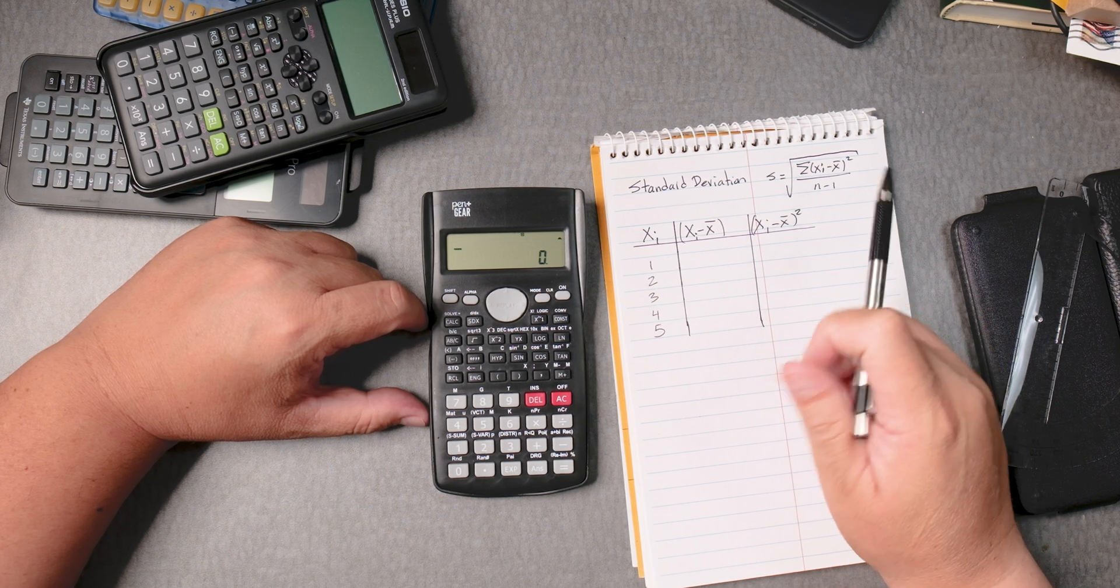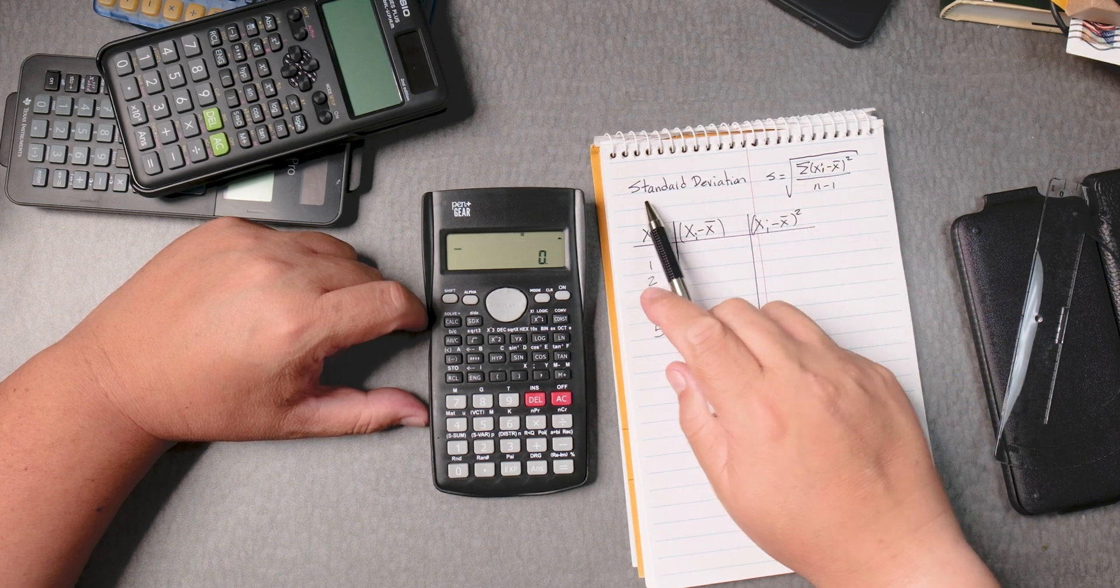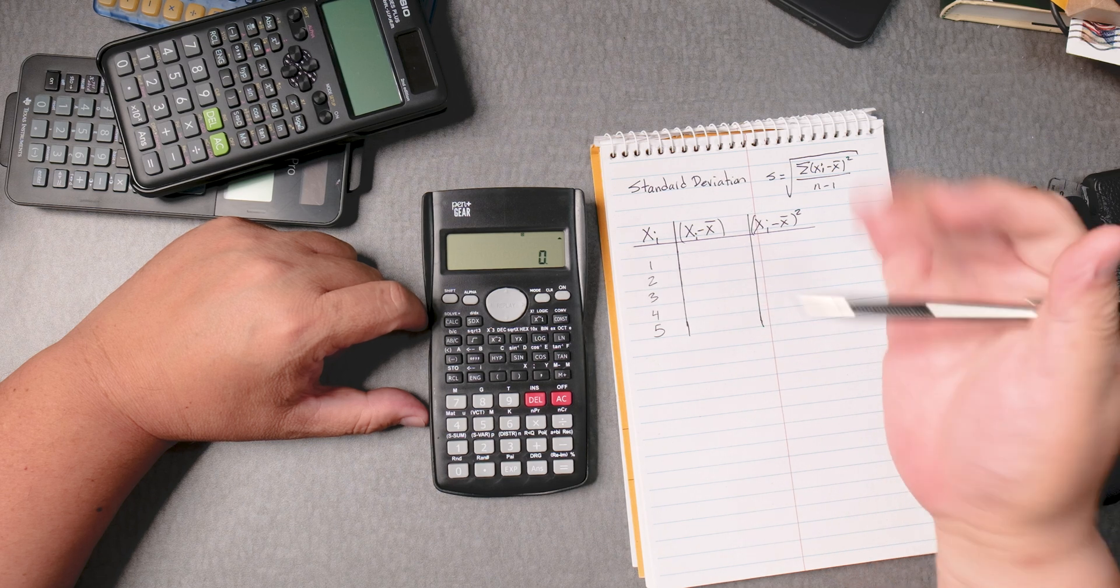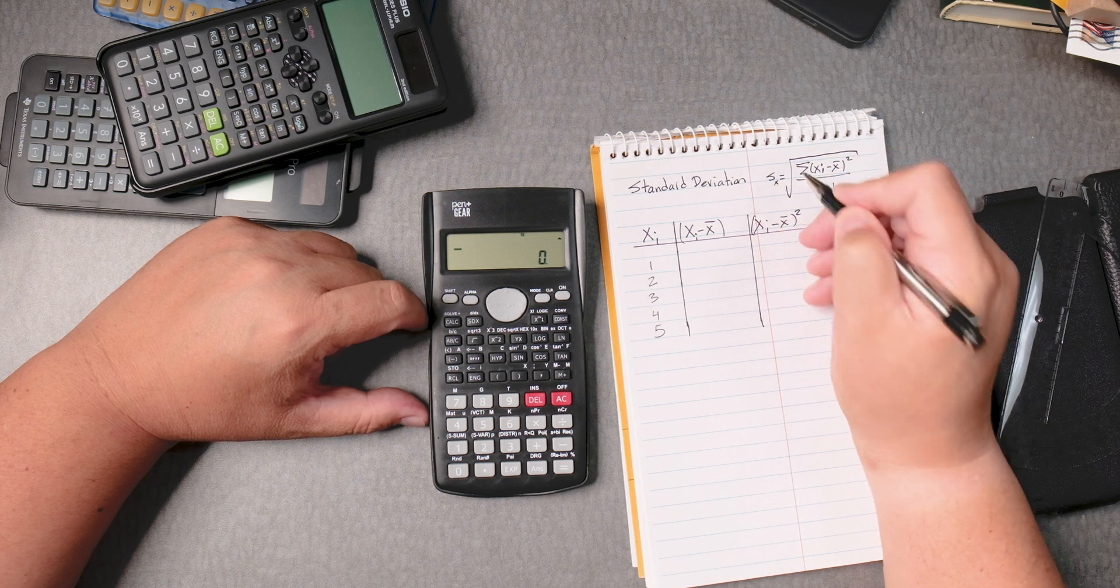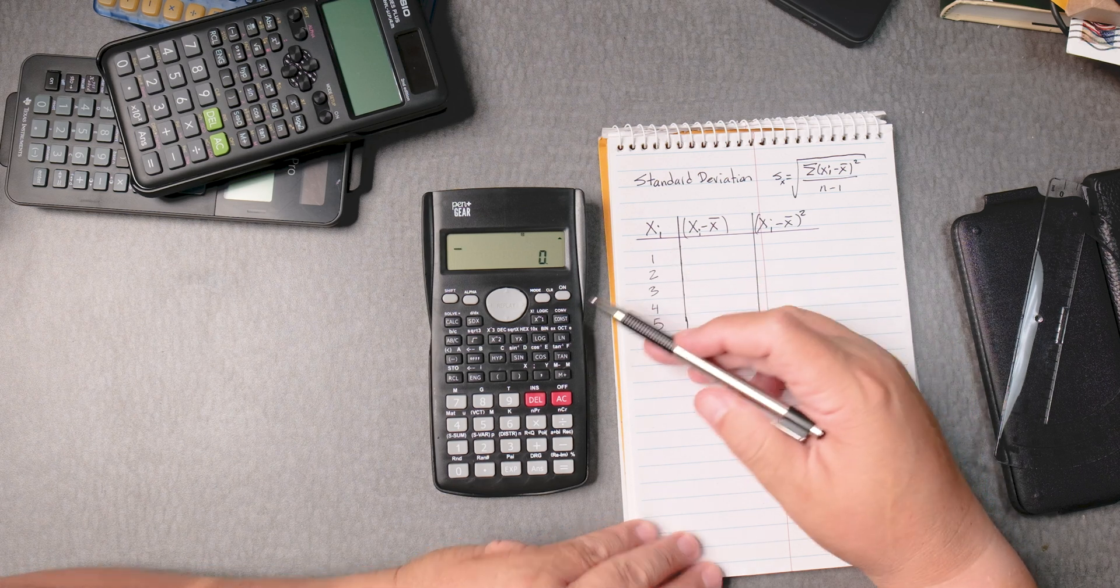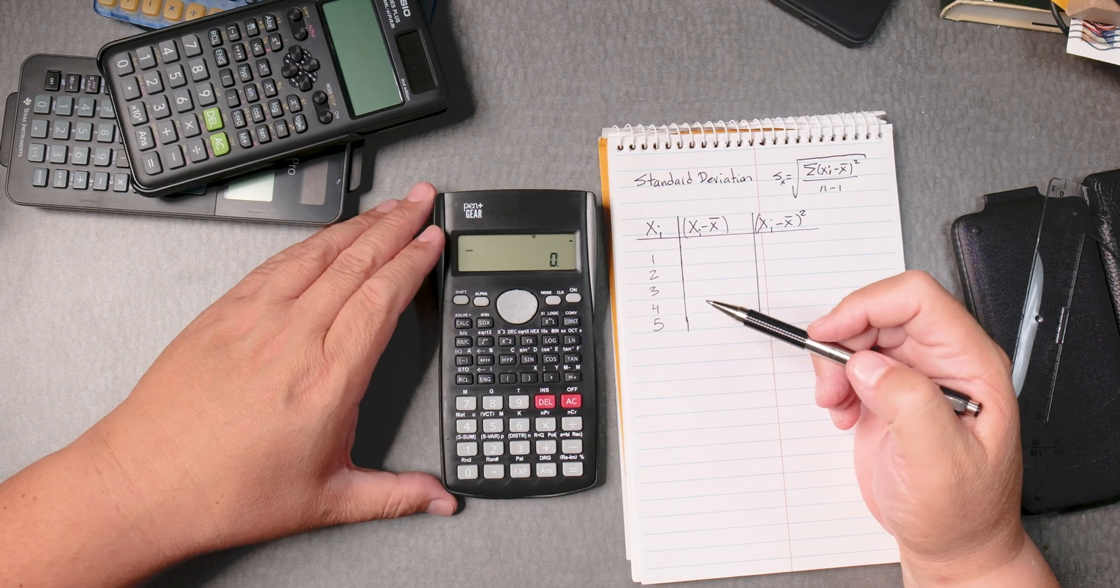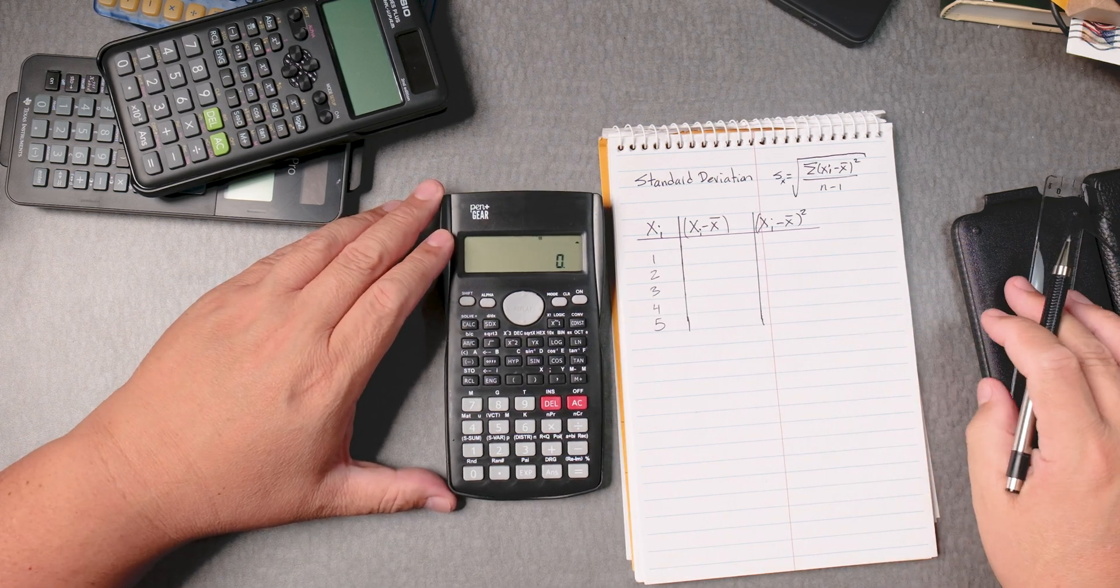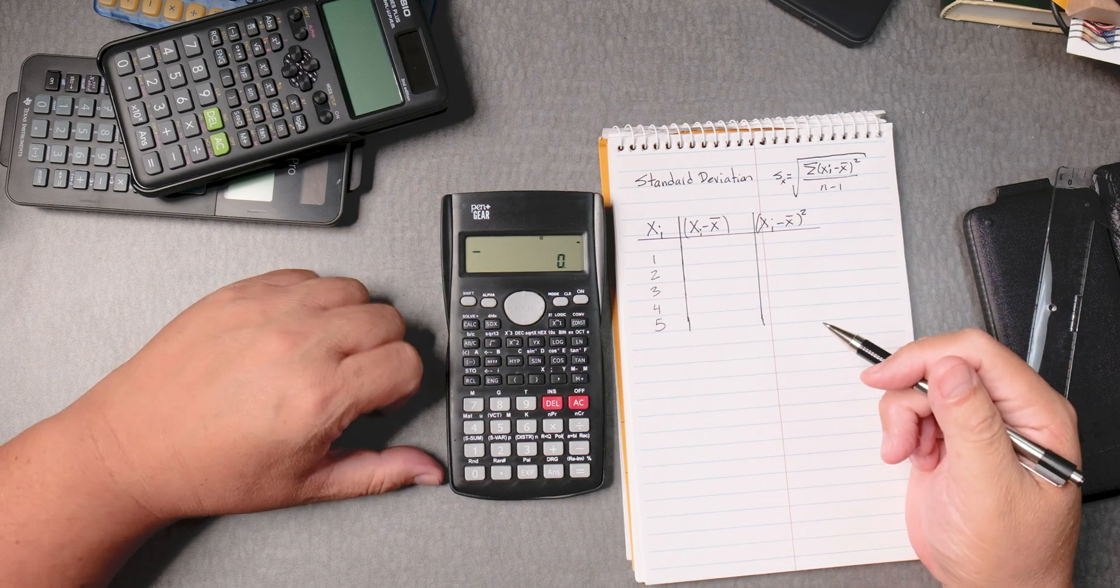So this is the formula for the sample standard deviation. We'll put an x over here. What we want to do is enter the data first and then see if we can find some important values so that when we talk about this, it'll be easier to calculate.